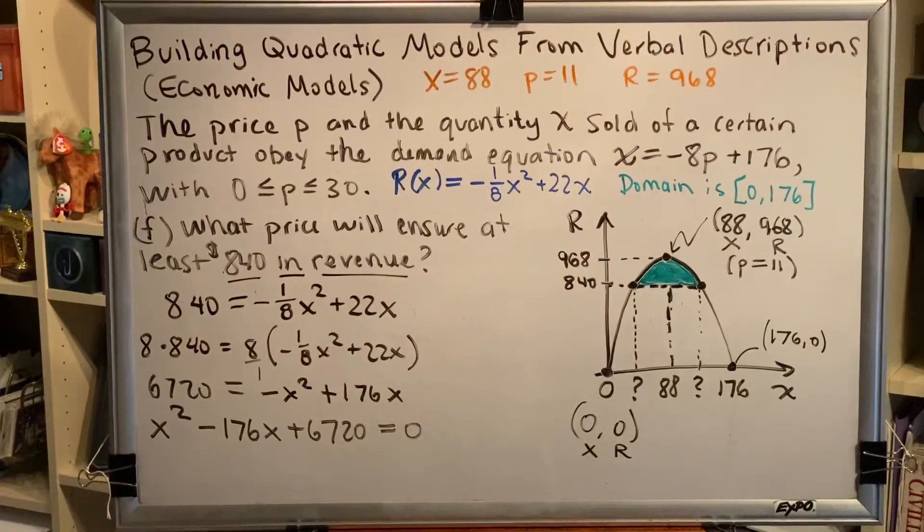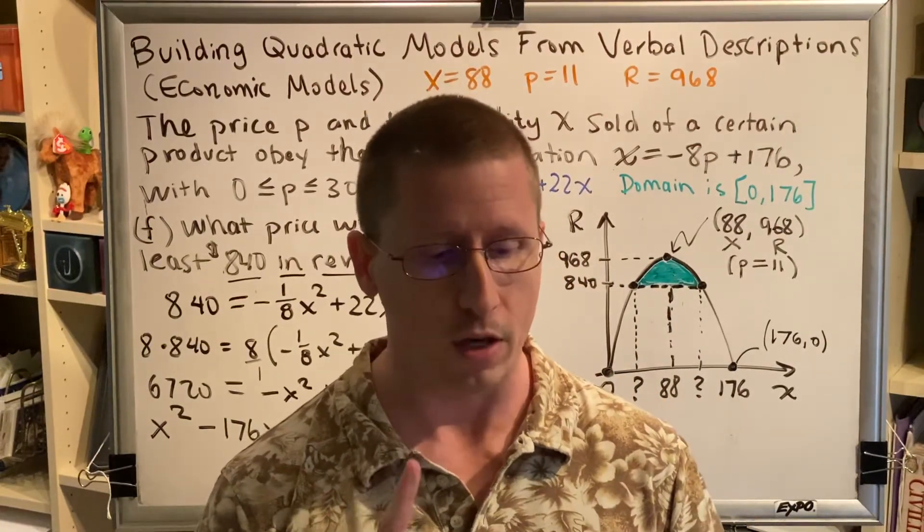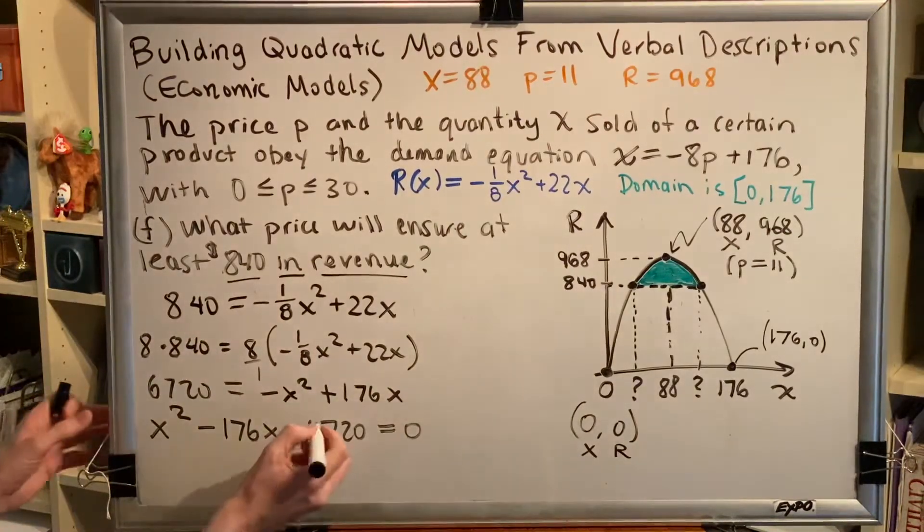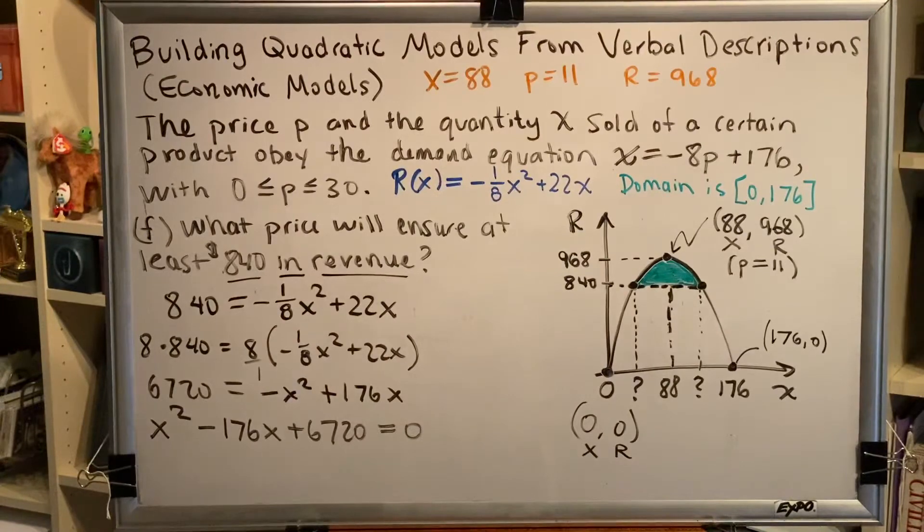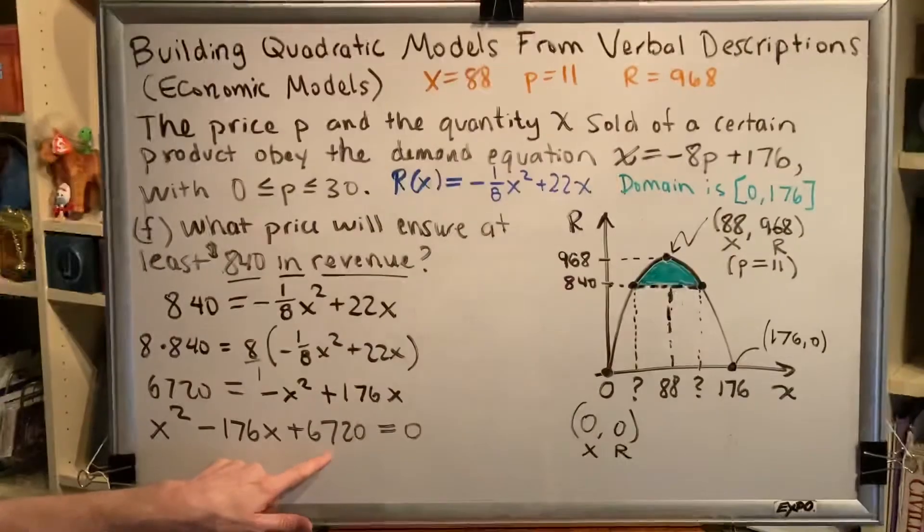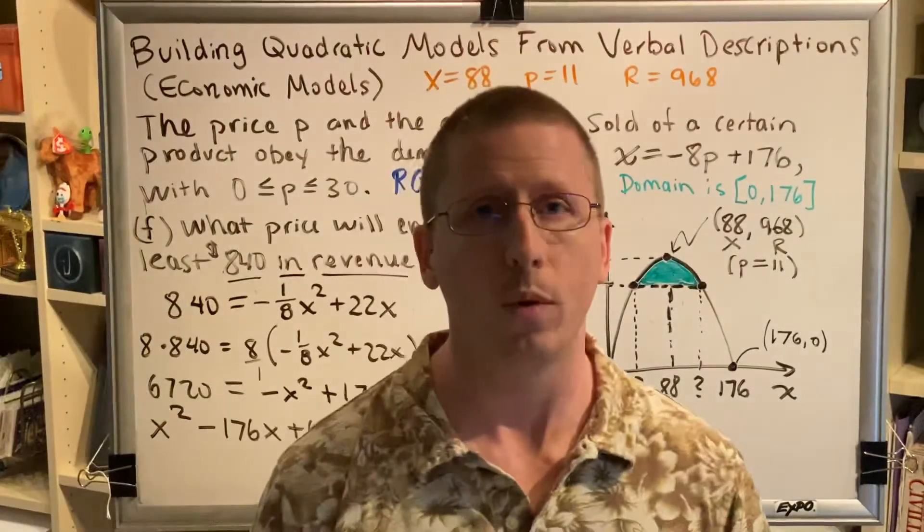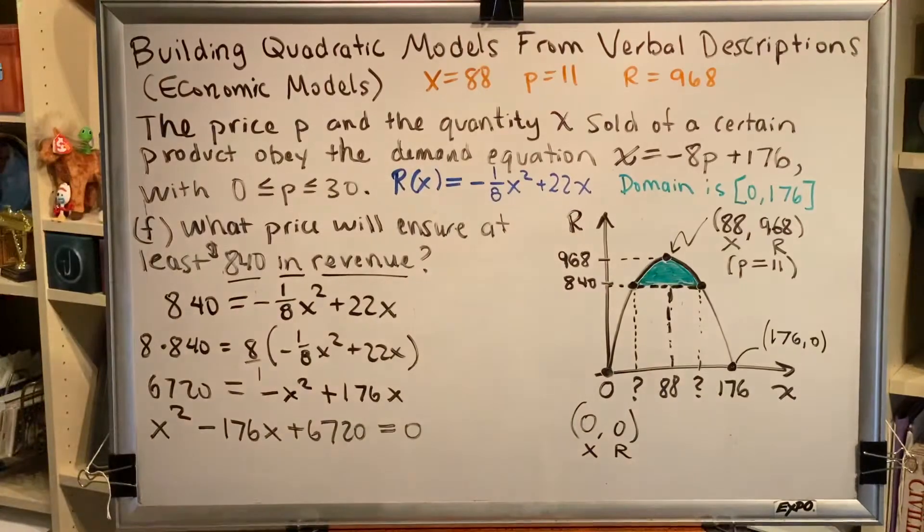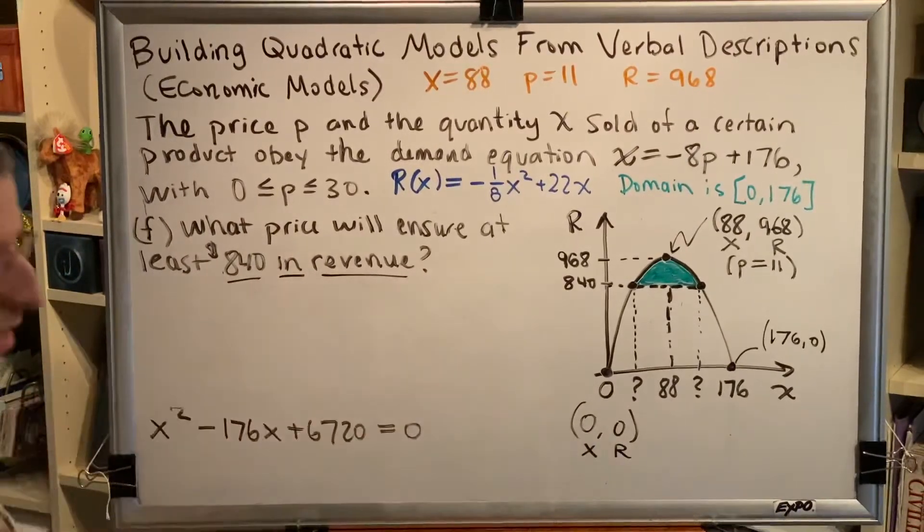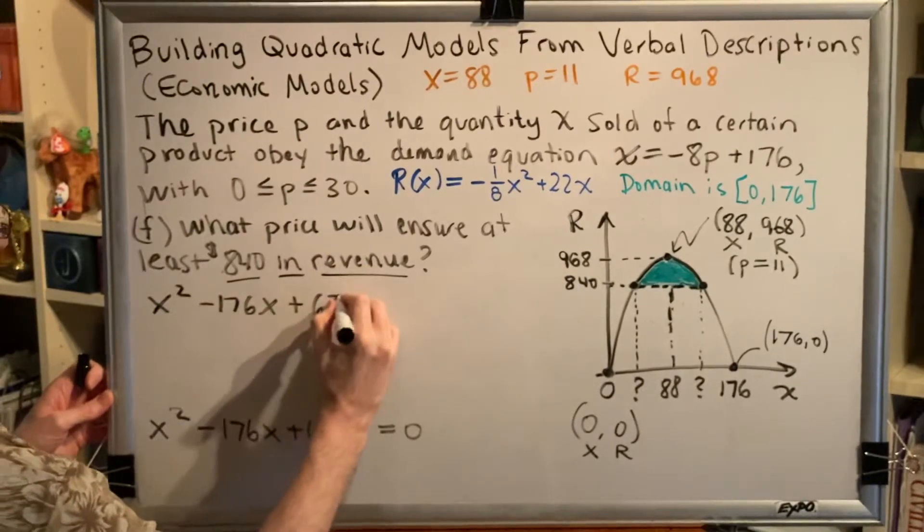Now I have an important decision to make. I need to solve this quadratic equation. There are three methods that you can use to solve quadratic equations. You can use the quadratic formula, you can complete the square, or you can factor. Any one of those three will work for this particular problem. This is factorable. Some people like playing with numbers and will enjoy finding two numbers that multiply to make 6720 but add to make -176. Other students might find that frustrating and would rather prefer a more direct route to getting their answer. So here's what I'm going to do. I'm going to reinforce a lesson that was taught in a previous video.